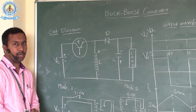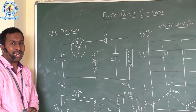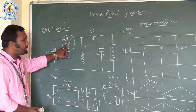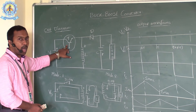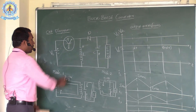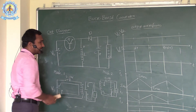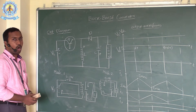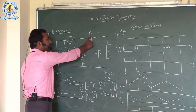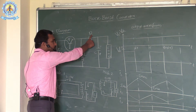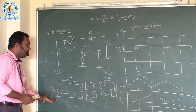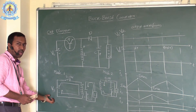Now let us see the operation. In mode one of operation, the modes of operation depend on the switching on and off of the switch. On and off conditions are applied to the switch. The thyristor T is in the ON condition, and whenever the thyristor T is in the ON condition, automatically the diode is in reverse bias condition.